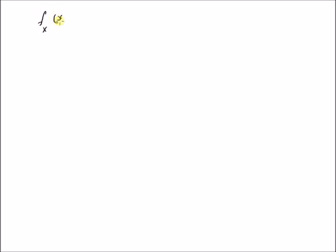Hello, welcome. In this short video let us look at the mean and variance of a Rayleigh distributed random variable. The PDF of a Rayleigh distributed random variable is given by f_X(x) = x / a² · e^(−x² / 2a²) for values of x greater than or equal to 0 and a greater than 0.